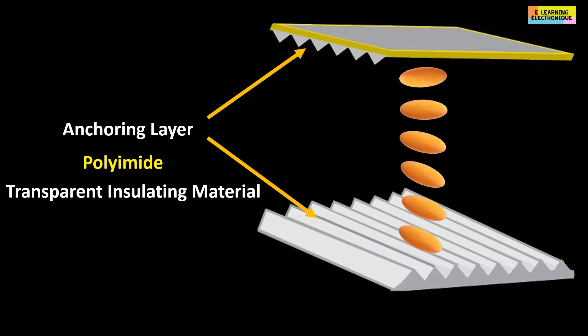On one of the glass plates, the grooves are oriented vertically and on the other the orientation of the grooves is horizontal. The liquid crystal molecules will orient themselves horizontally in contact with the layer having the grooves in the same direction. On the other plate, the molecules will be turned 90 degrees and will have a vertical direction.